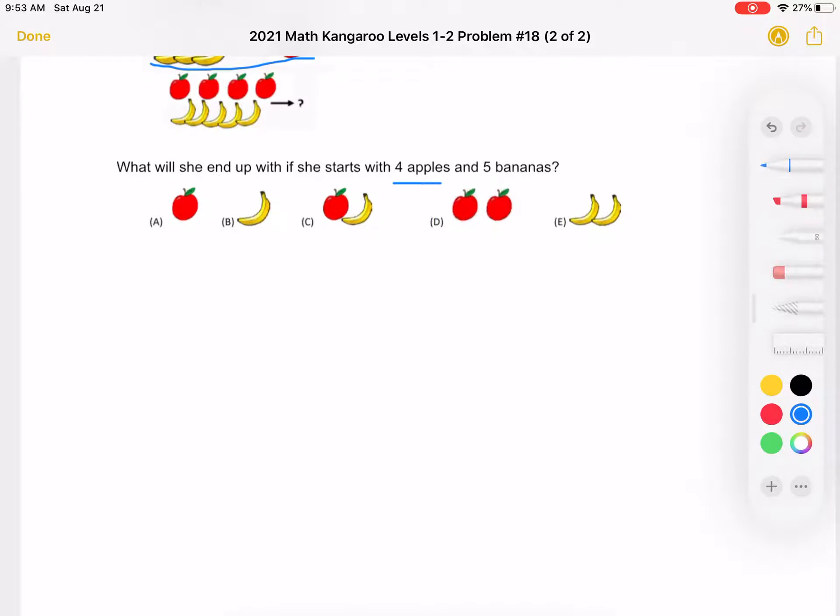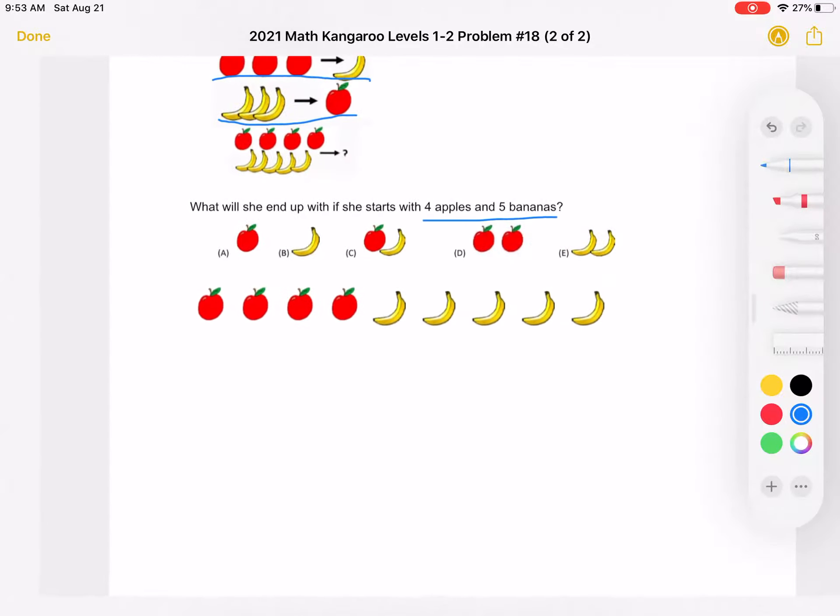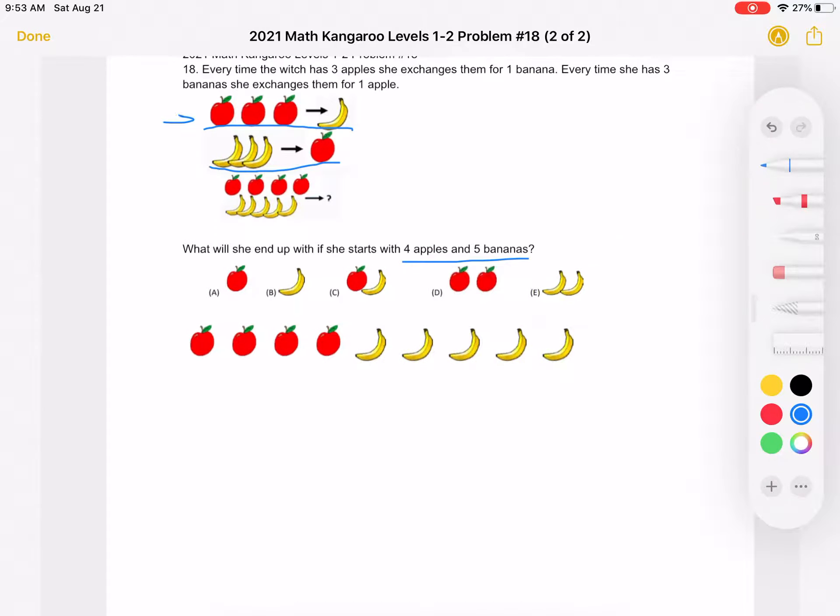She starts with four apples and five bananas, which I've drawn here. So out of these two exchanges she can make, we can see that she can exchange three apples for a banana and she can exchange three bananas for an apple. So now these three apples became this banana and these three bananas became this apple.